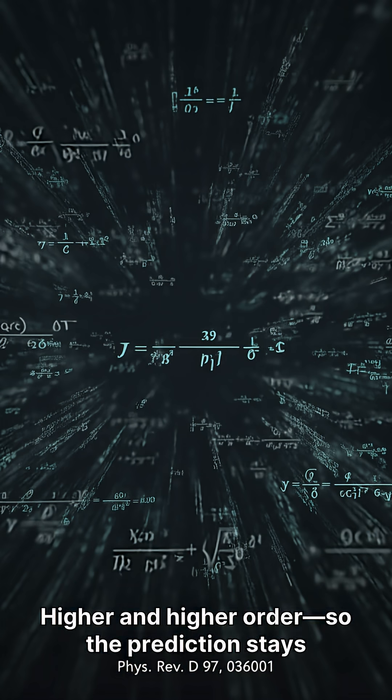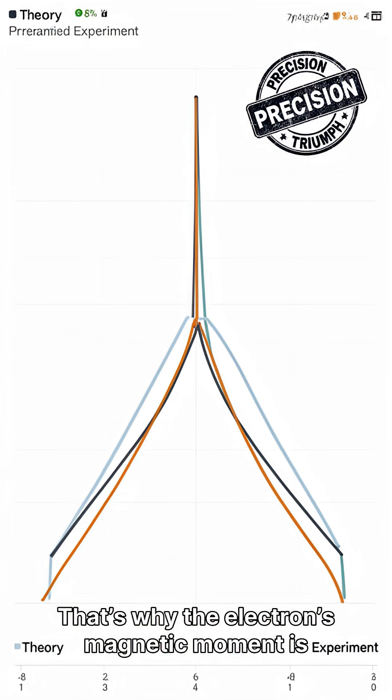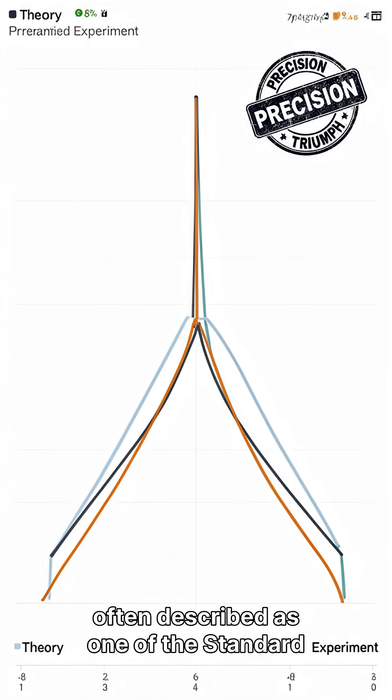So the prediction stays accurate at the same insane level. That's why the electron's magnetic moment is often described as one of the standard model's greatest precision triumphs.